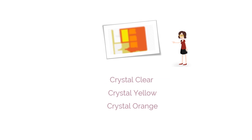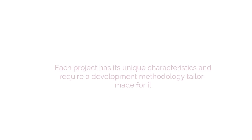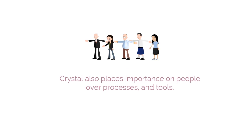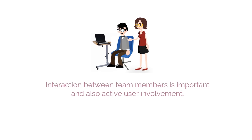The CRYSTAL family includes Crystal Clear, Crystal Yellow, Crystal Orange, and others. All these methodologies work on the idea that each project has its own unique characteristics and will require a development methodology tailor-made for it. As with every Agile methodology, Crystal also places importance on people over processes and tools. The interaction between team members is important, and it also calls for active user involvement.